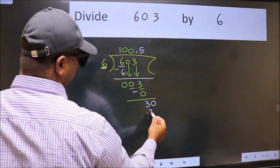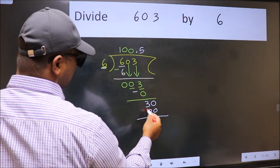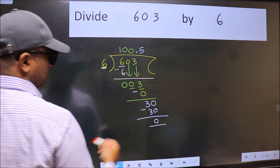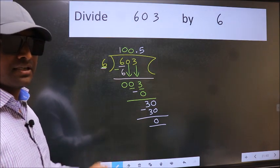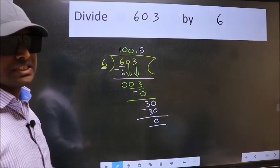Now we subtract, we get zero. Did you get zero? Did you understand where does the mistake happen? You should not do that mistake.